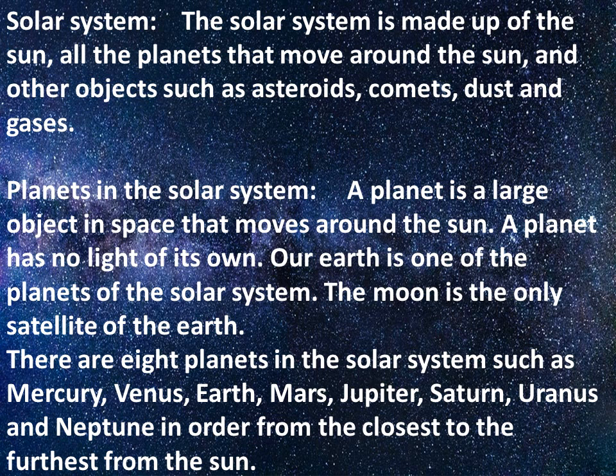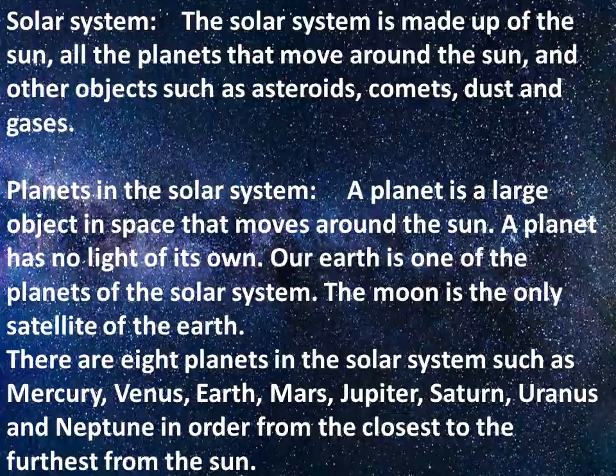A planet is a large object in space that moves around the sun. A planet has no light of its own. Our Earth is one of the planets of the solar system. The moon is the only satellite of the Earth. There are eight planets in the solar system: Mercury, Venus, Earth, Mars, Jupiter, Saturn, Uranus, and Neptune, in order from the closest to the farthest from the sun.